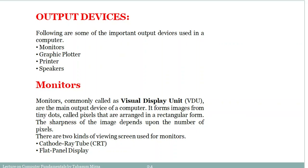The following are some of the important output devices used in a computer: monitors, graphic plotters, printers, and speakers. Monitors are commonly called visual display units. These are the main output devices of the computer. They form an image from tiny dots or pixels arranged in a rectangular form, and the sharpness of the image depends on the number of pixels.